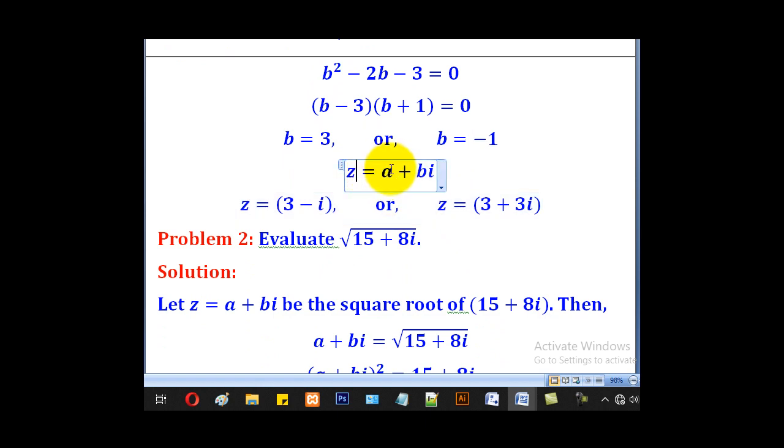But remember our Z was equal to A plus Bi, so we substitute for A and B. One Z will be 3 minus i, another Z will be 3 plus 3i. So that's how we solve for Z.